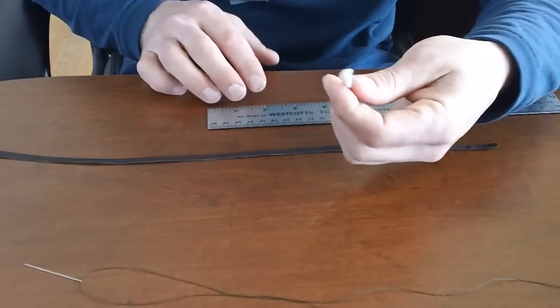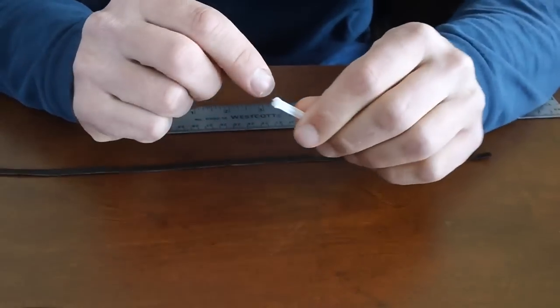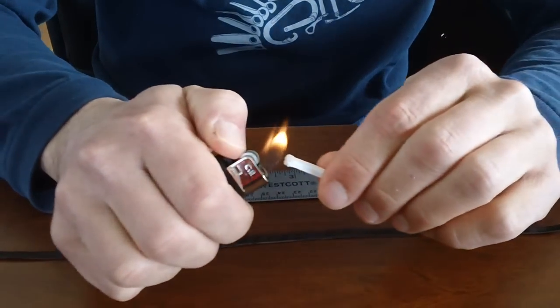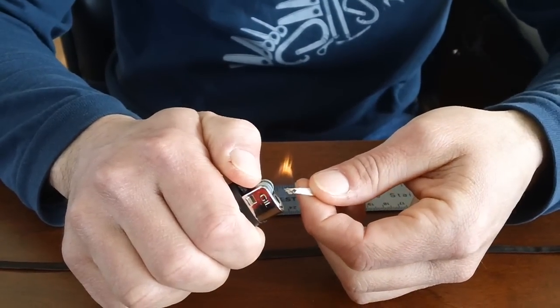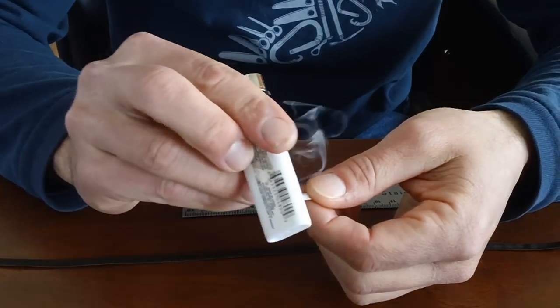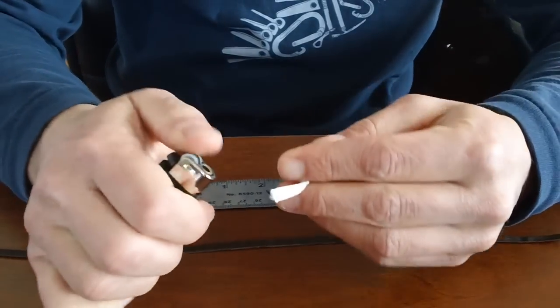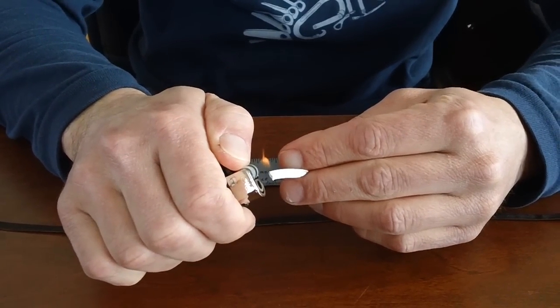The first thing we're going to do is burn the edges of the elastic. As you can see, after you cut them they start to fray. We don't want that to fray too much. We'll just burn the rubber a little bit so it stays and doesn't fray once we sew it in.